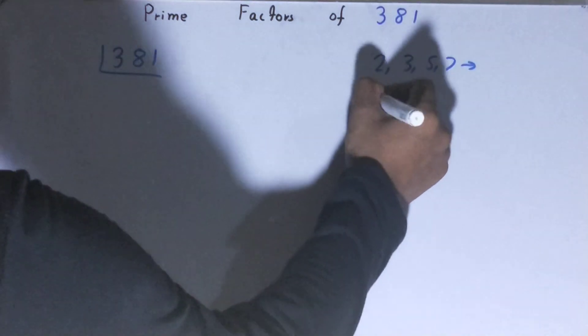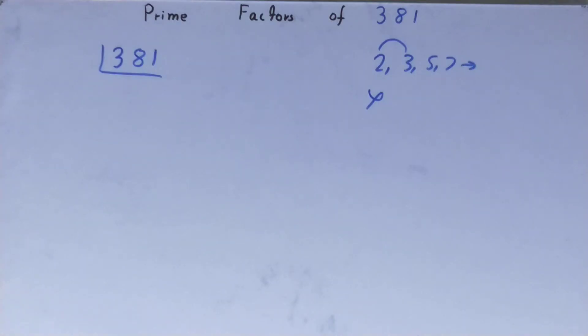So we'll go to the next lowest prime number, that is 3. Is the number 381 divisible by 3? Let us check.